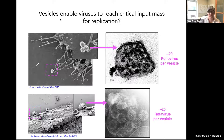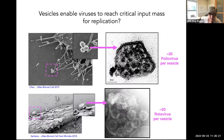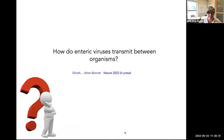Interestingly, the vesicles I showed you earlier — conduits for en masse viral transmission — typically have about 20 to 25 particles per vesicle. In the case of poliovirus, there are about 20 poliovirus particles packaged per vesicle, and similarly for rotavirus. So these vesicles may be a way in which viruses can reach this critical input mass and replicate.